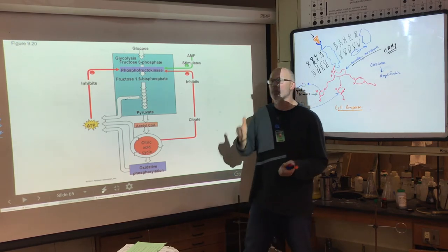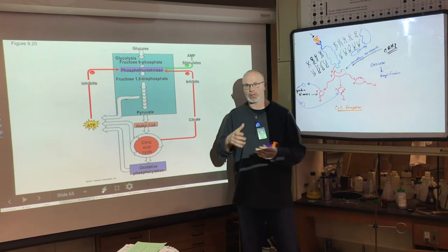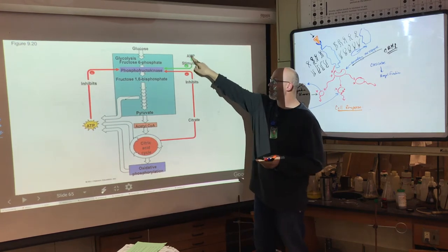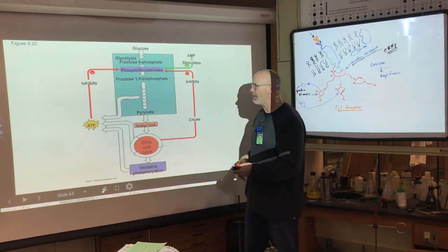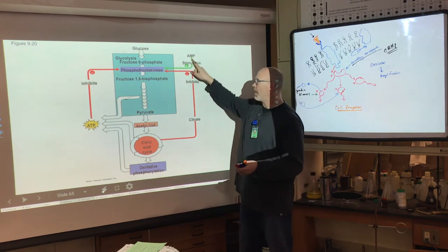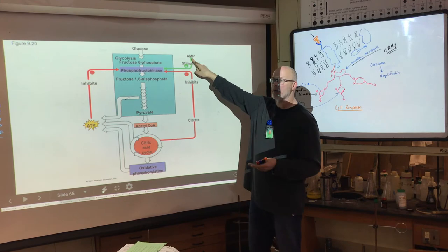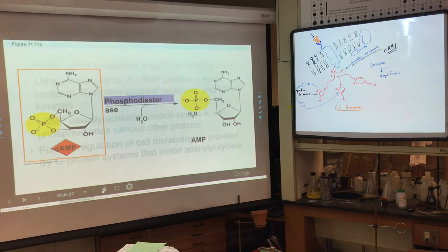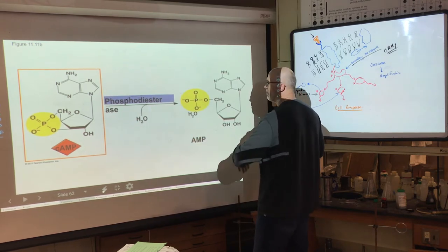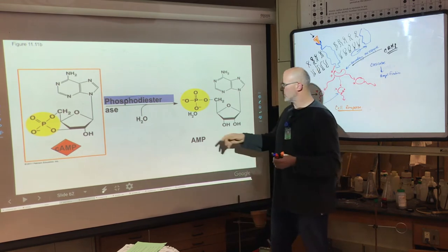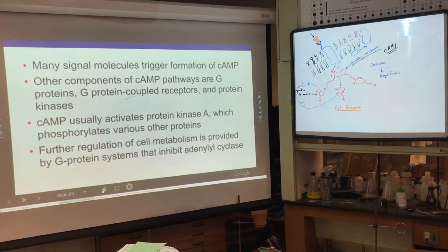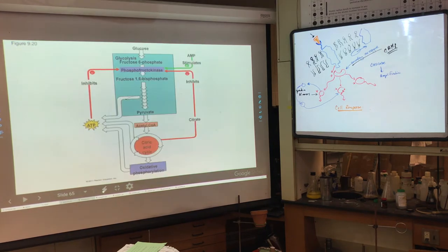AMP (adenosine monophosphate) is usually present when you've been cleaving phosphates from ATP and ADP on high energy demand. These reactions are occurring in the cytosol simultaneously. Having AMP made can stimulate glycolysis. Caffeine blocks phosphodiesterase, stopping the production of AMP, while normally phosphodiesterase produces AMP that stimulates glycolysis. These things are not happening in vacuums — they're interconnected.